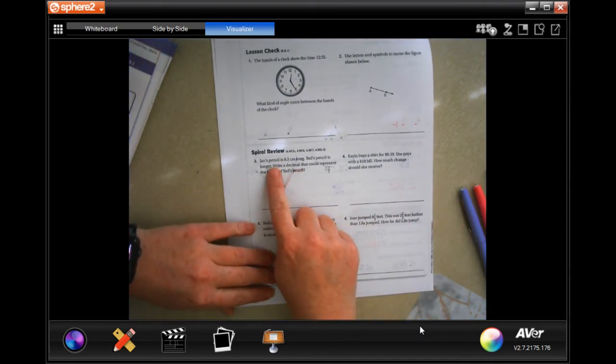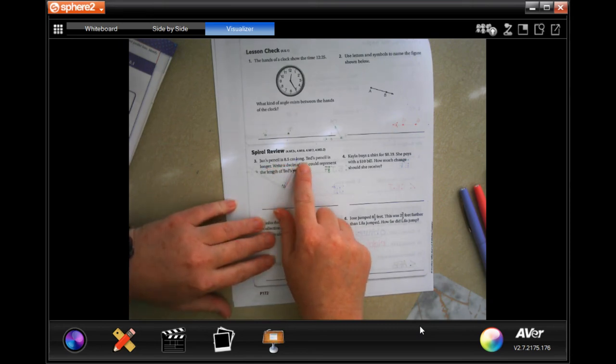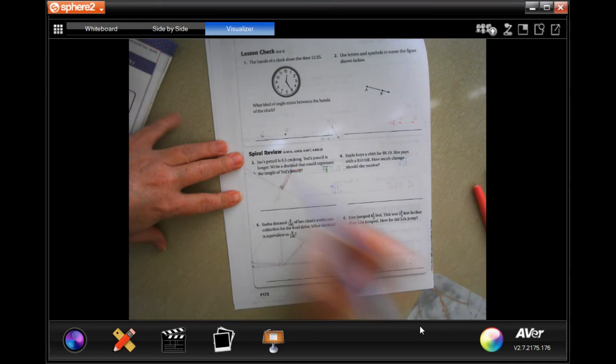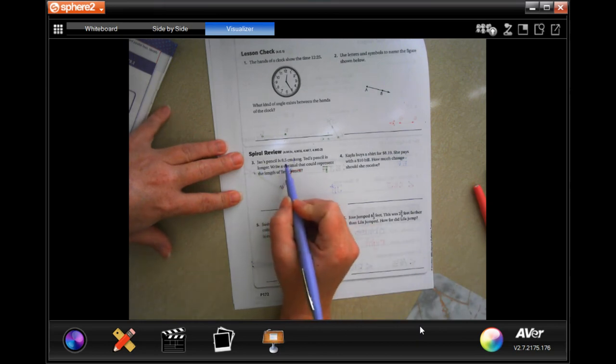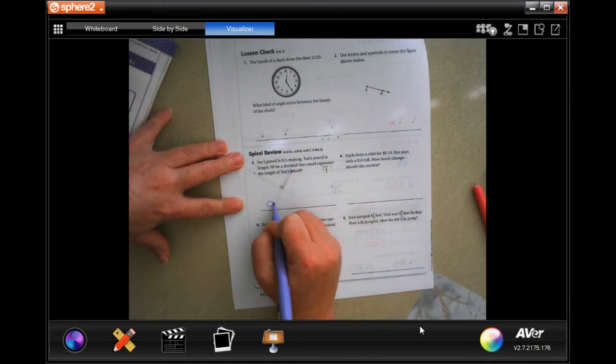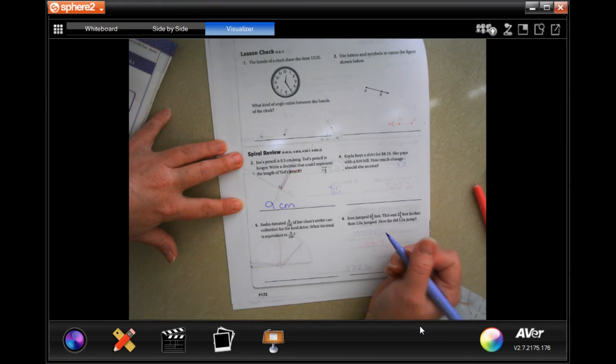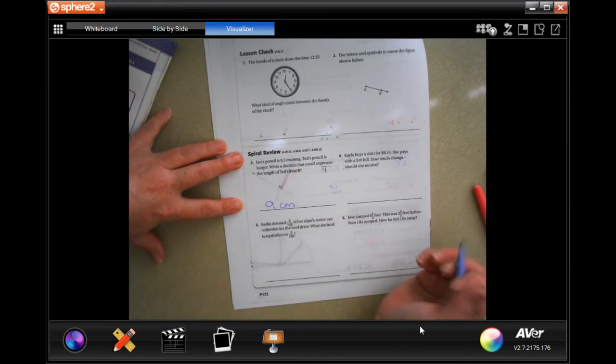It says Jam's pencil is 8.5 centimeters long. Ted's pencil is longer. Write a decimal that could represent the length of Ted's pencil. Well, if Jam's is eight and a half centimeters long, then Ted's could be nine centimeters, ten centimeters, twenty centimeters—anything longer than 8.5.